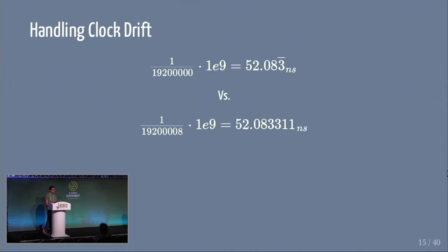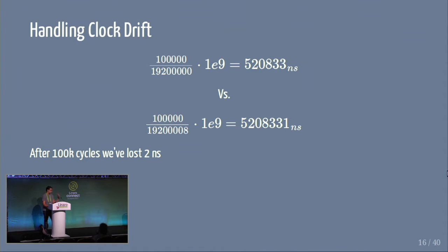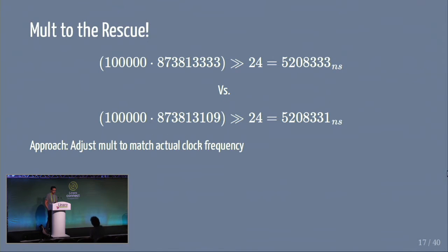How do we take care of clock drift? Hardware is never really perfect — the hardware may be programmed to be 19.2 MHz but actually runs at 19.2 MHz plus 8 Hz extra. After 100,000 cycles, you've lost two nanoseconds. This is what NTP is for. The way we do it in the kernel is we use the mult value in the mult-shift to multiply with a slightly different frequency so we calculate a slightly different number. When the NTP adjustment comes in, all it's really doing is modifying this mult value, which takes care of the NTP adjustment.